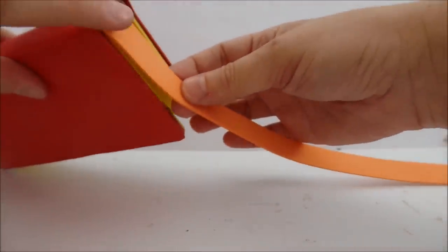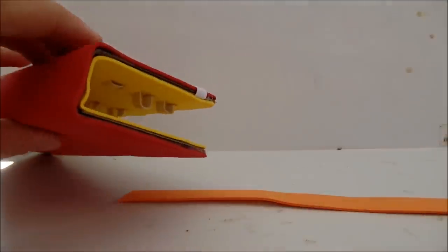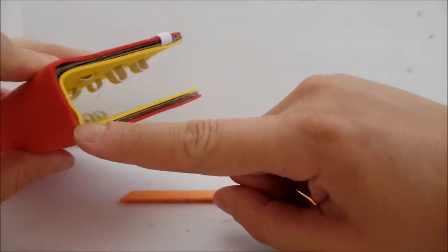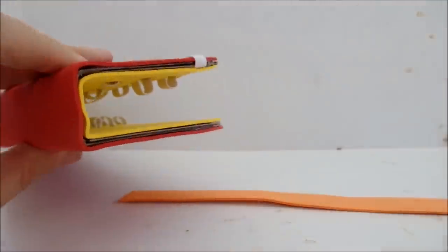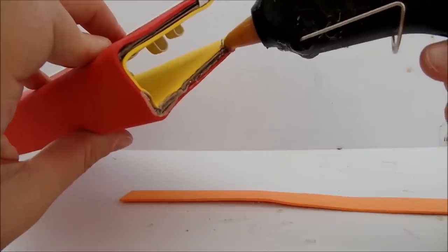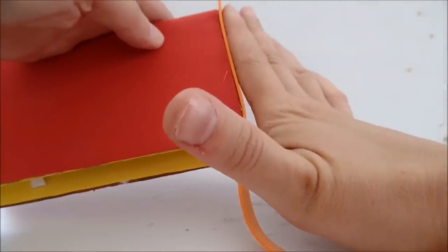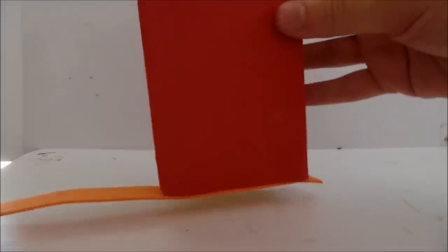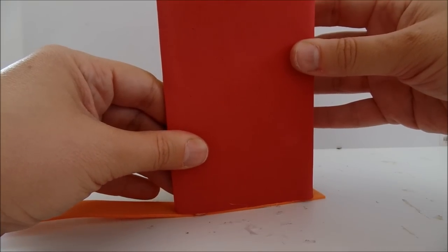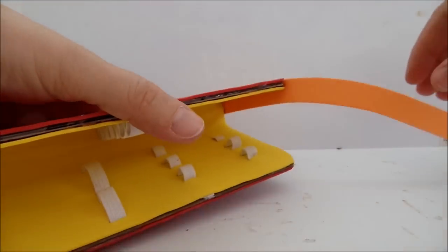And start gluing the strip on the sides of the pencil case. Start with this part and then here. You can press, collect the excess glue and continue gluing.